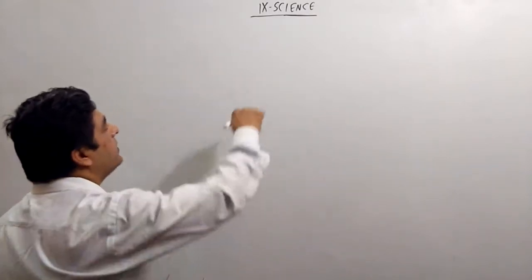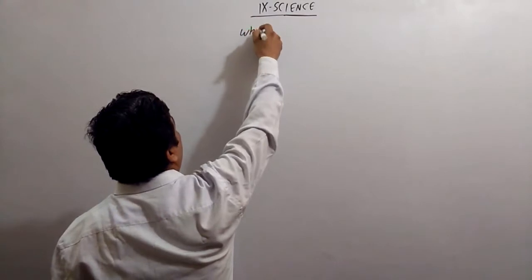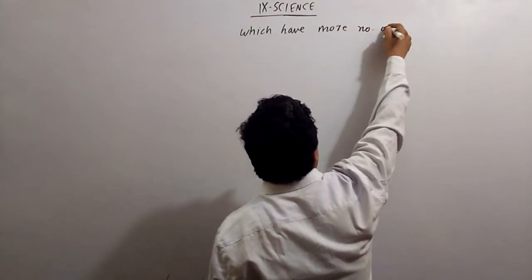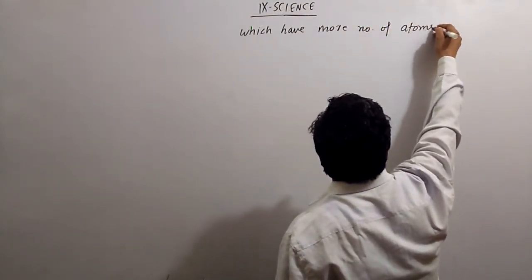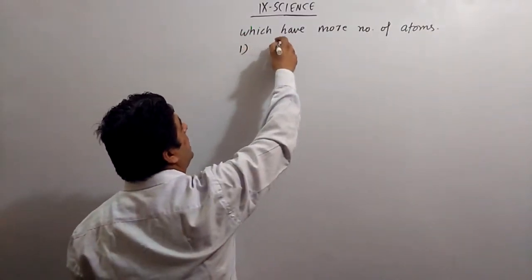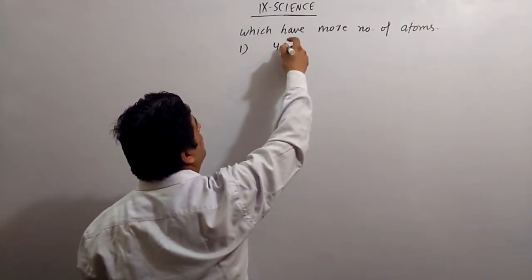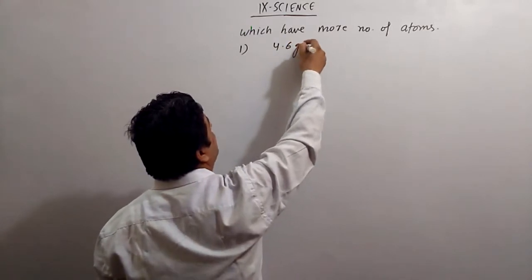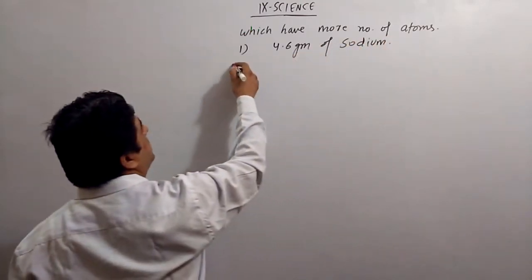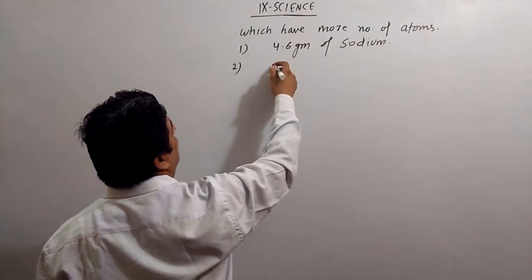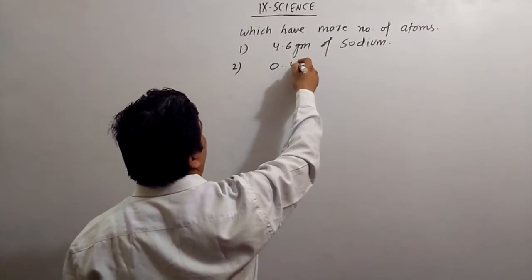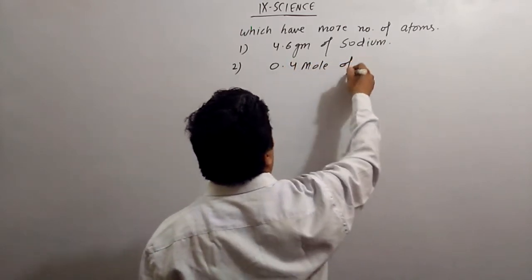Let us take: which has more number of atoms - 4.6 grams of sodium or 0.4 mole of magnesium?